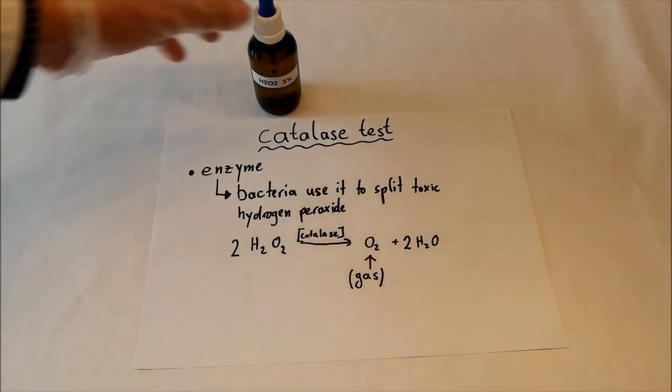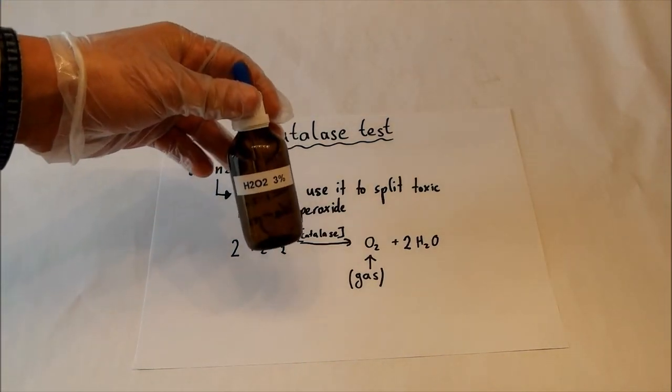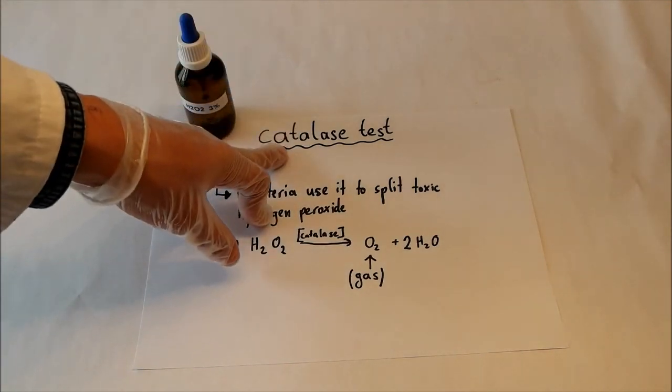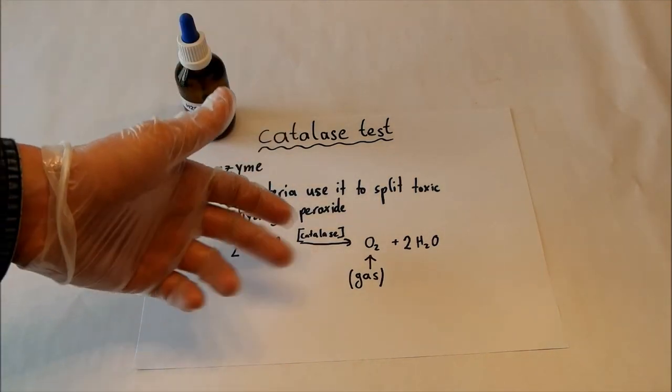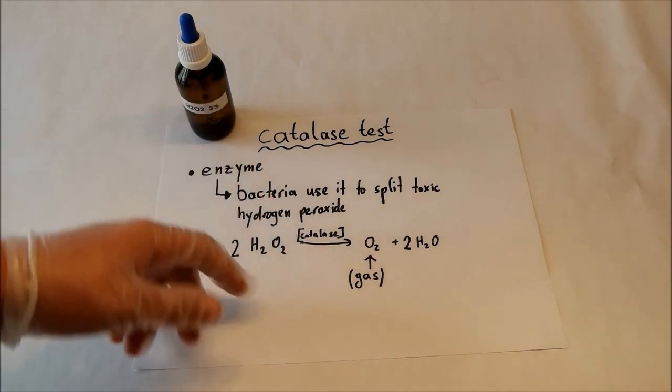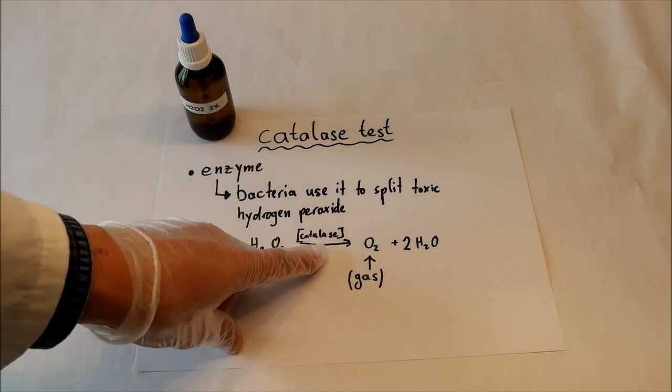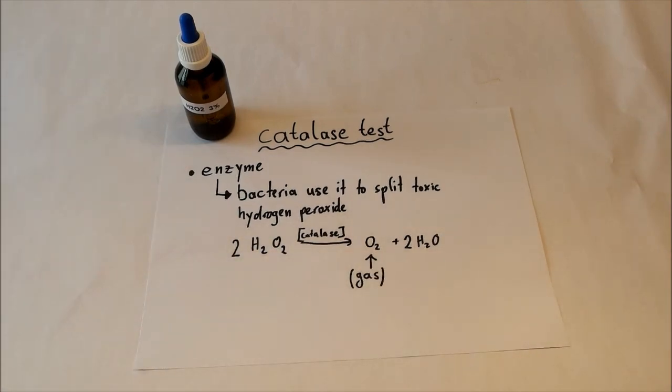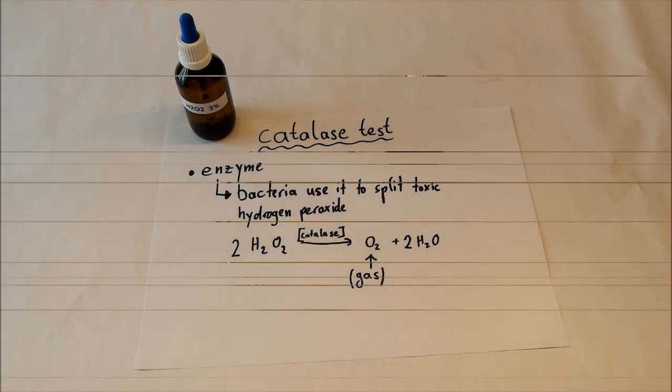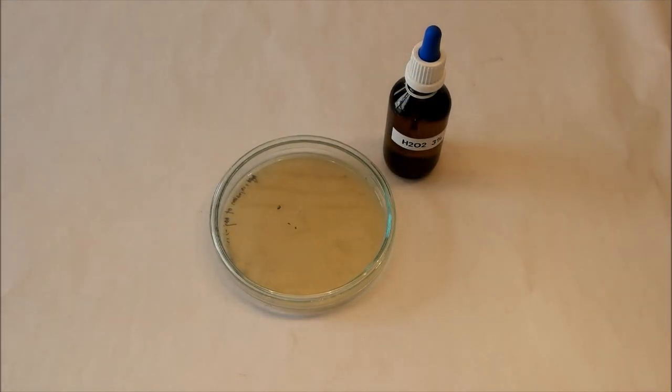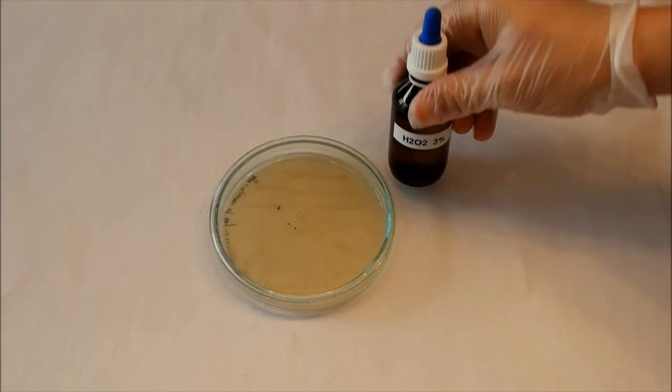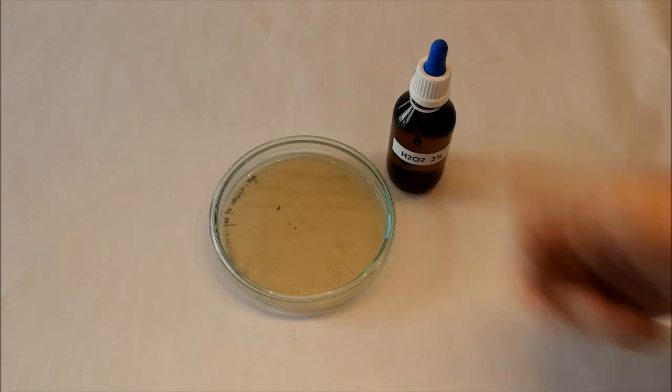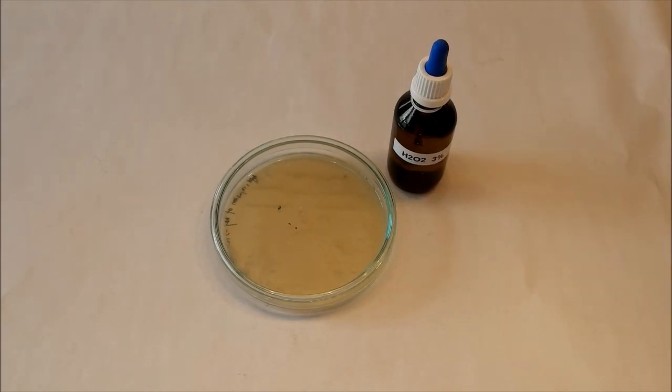And when we now drop our hydrogen peroxide on a bacteria colony, and it's catalase positive, you will see bubbles get out of this colony, because the catalase, if the bacteria produces it, splits the hydrogen peroxide. So now I'll drop a bit of this hydrogen peroxide on a colony to see whether it's catalase positive or negative.